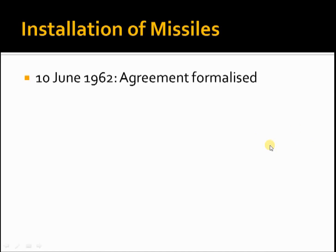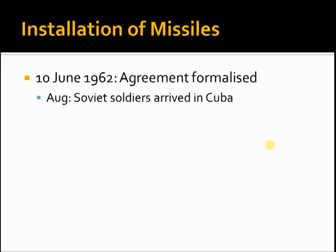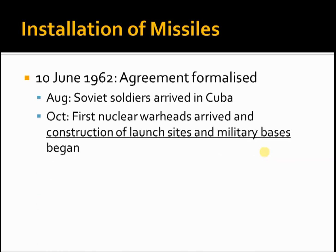This agreement to place the missiles was finalized on 10th June 1962. The Soviet soldiers arrived in Cuba to help bolster Cuban defense and ensure that the installation of missiles would go smoothly. By October, the first nuclear warheads had arrived, and the construction of the launch sites and military bases had begun. This was essentially the event — the actual placing of nuclear missiles — which was the basis behind why the Cuban Missile Crisis broke out, which we will cover during the next lesson.